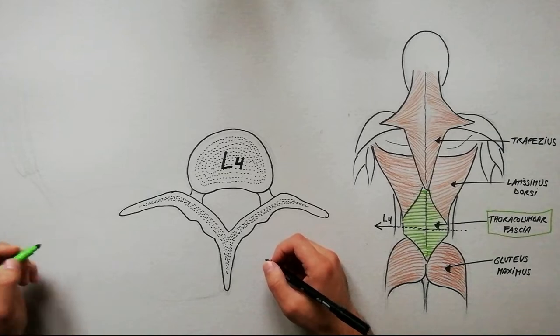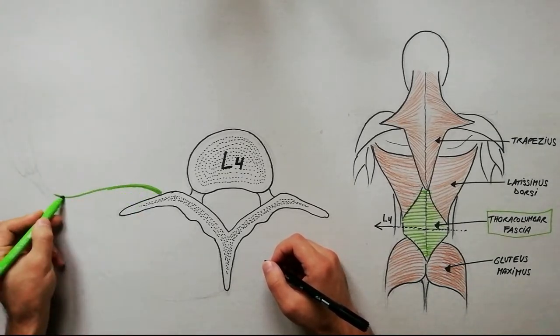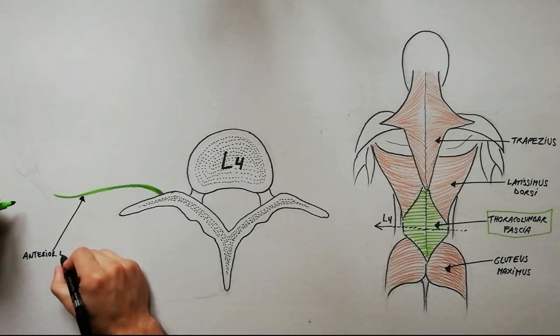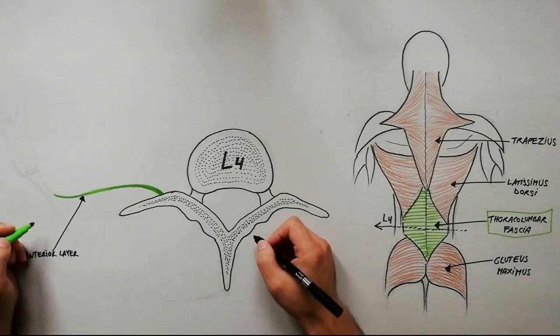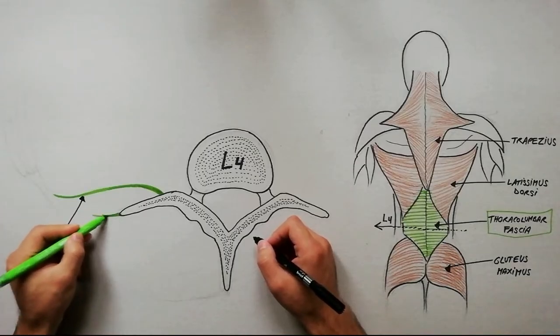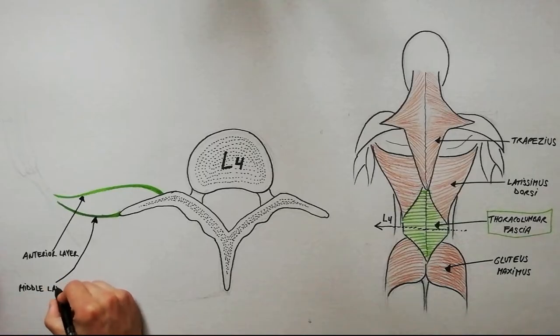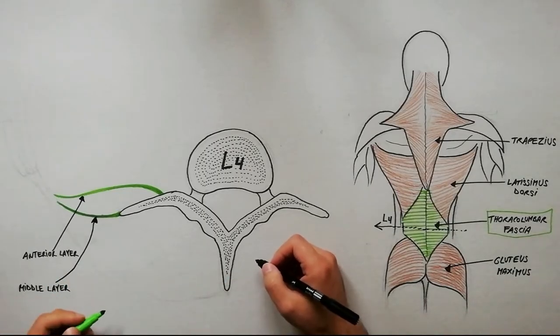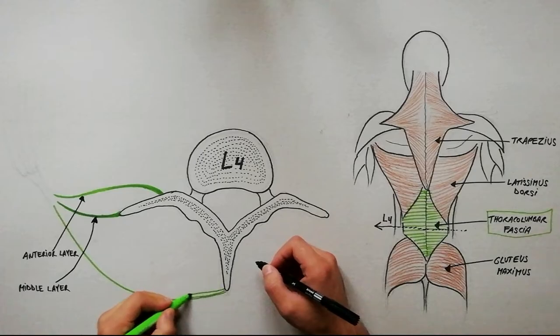The anterior layer inserts onto the anterior part of transverse processes of vertebrae. The middle layer inserts onto the tip of the transverse processes of vertebrae. The posterior layer, the thickest of the